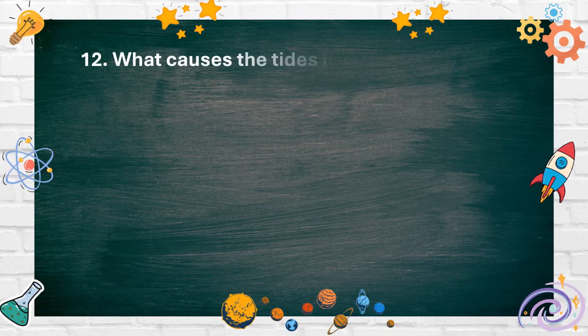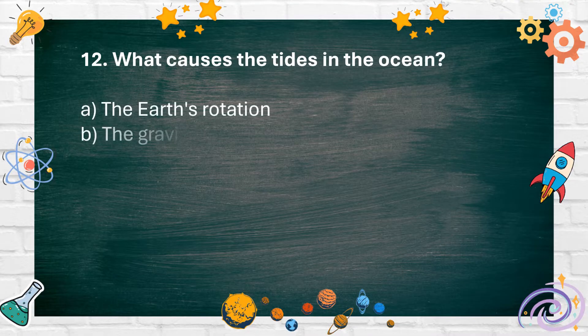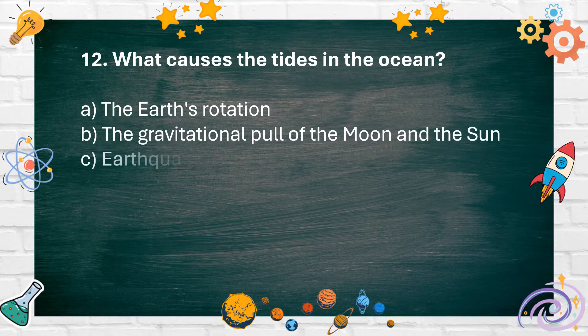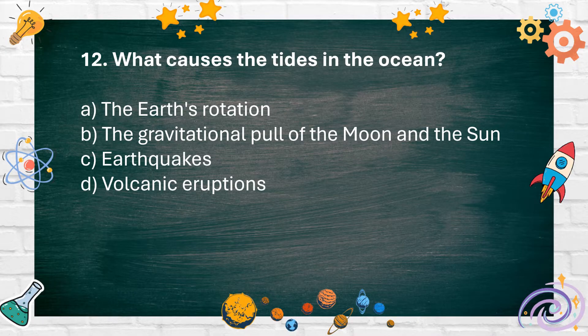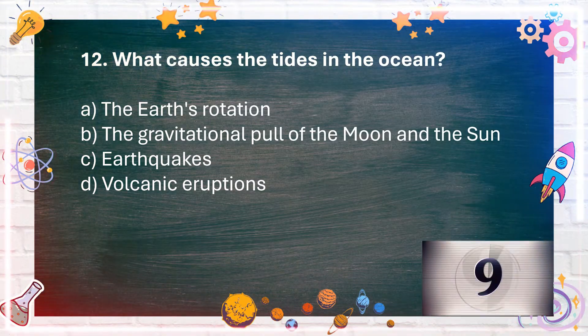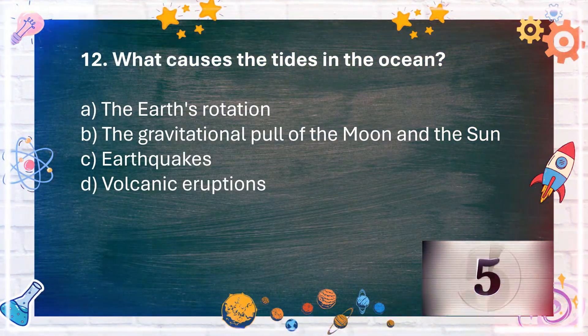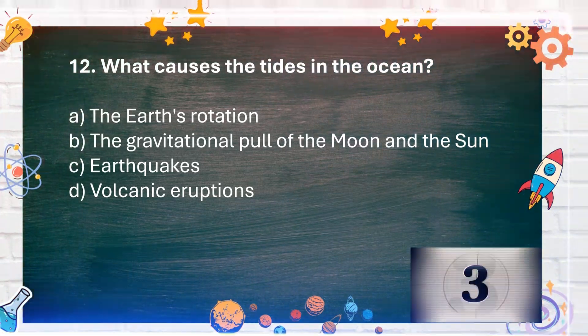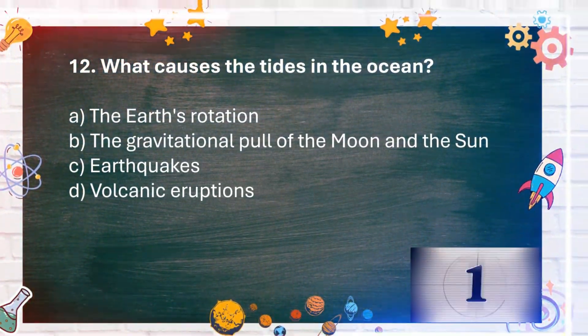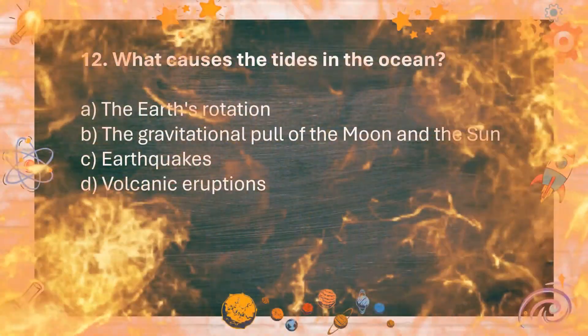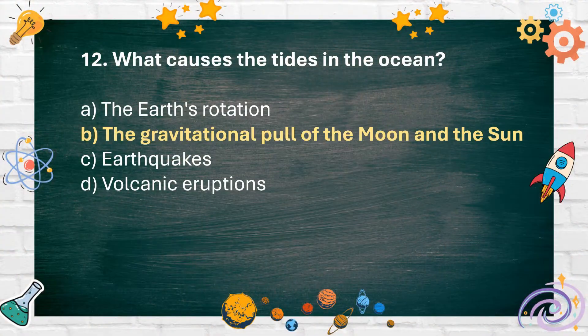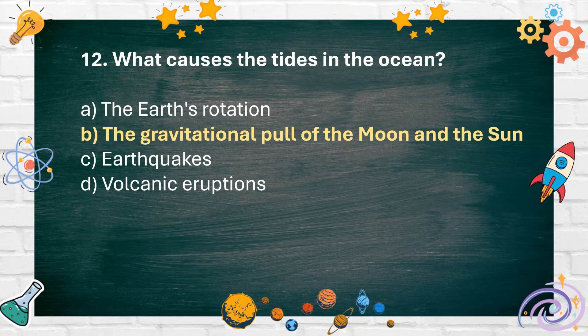Number 12: What causes the tides in the ocean? A. The Earth's rotation, B. The gravitational pull of the Moon and the Sun, C. Earthquakes, D. Volcanic eruptions. The answer is B. The gravitational pull of the Moon and the Sun.